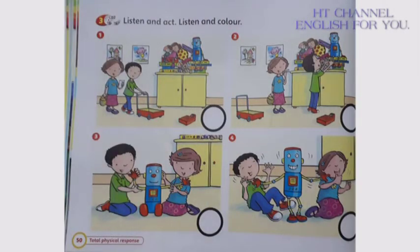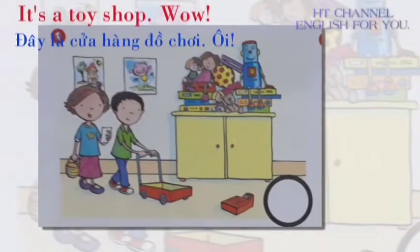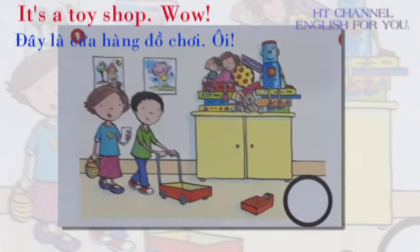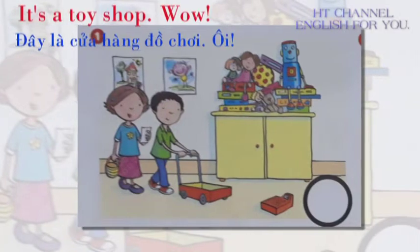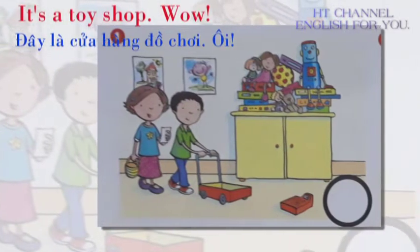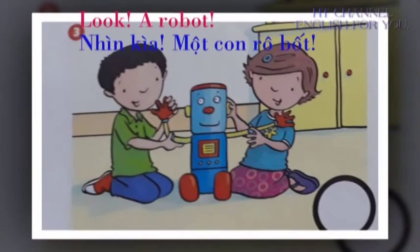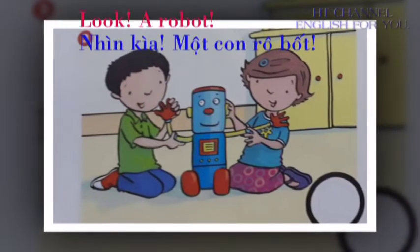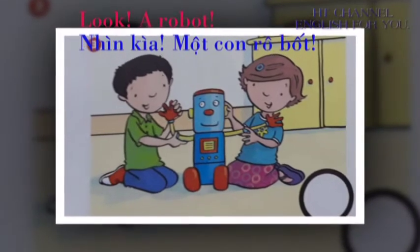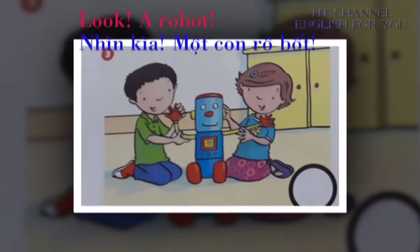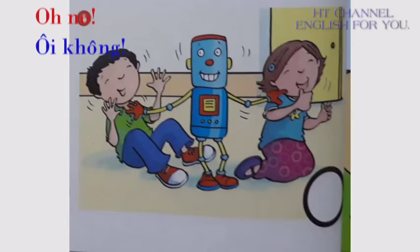Activity 3: Listen and act. It's a toy shop! It's a toy shop! Wow! What's this? Look! A robot! Oh, no!